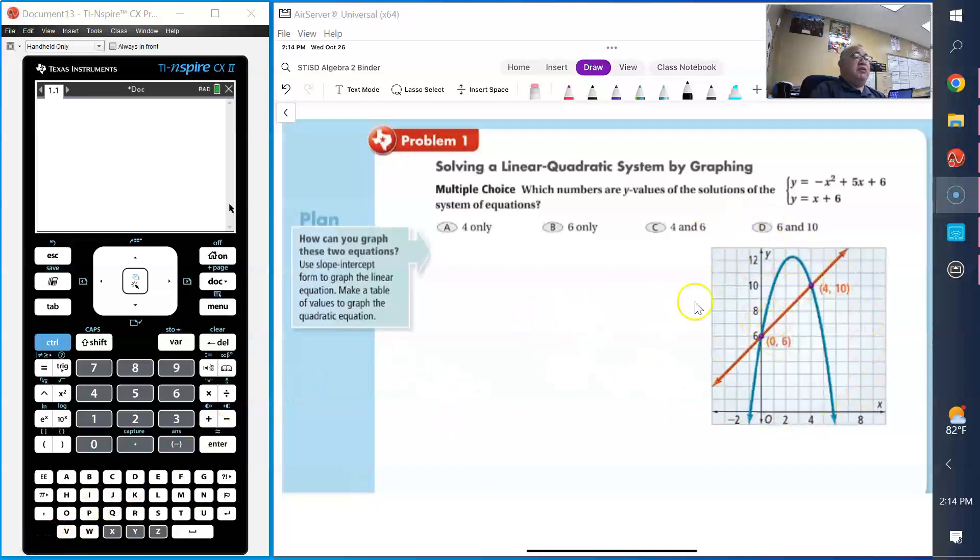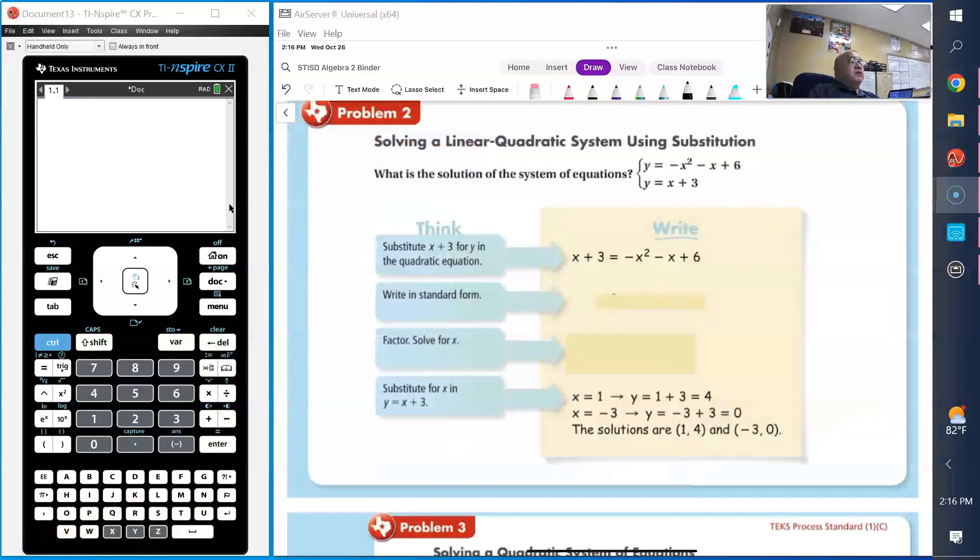This problem involves solving a linear quadratic system by substitution. You can see they replaced the y value and set it equal to each other. Now we're going to do the algebra part. We're going to subtract x from negative x and subtract 3 from 6. So what you get is negative x squared minus 2x plus 3 equals 0.